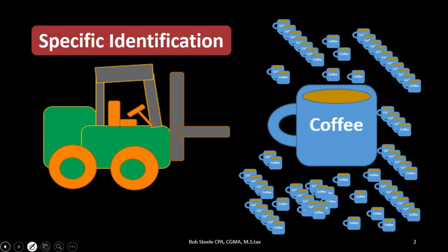Last time we talked about specific identification when we were selling the inventory of forklifts. We used specific identification, meaning we had an ID number for each particular forklift and knew exactly which forklift we sold and the cost of that particular forklift. This makes sense for forklifts because they're relatively large, they can be distinct in nature, and they have a fairly large dollar amount compared to other types of inventory.